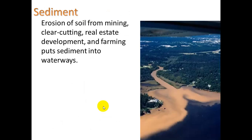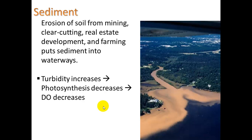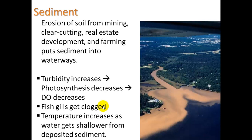Sediment is another big problem. We see that when we have erosion of soil from mining, clear cutting, real estate development — when you see building happening around town, they first strip the area of vegetation so it's just dirt, then begin construction. And farming also — these all put sediment into waterways. Turbidity increases in a huge way, which means photosynthesis decreases because there's no light getting in, which means dissolved oxygen decreases. Things die — that's the ultimate effect. Fish gills can get clogged, it can interfere with their eggs for reproduction, and temperature can increase as water gets shallower from deposited sediment.